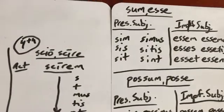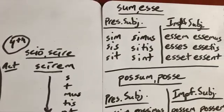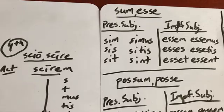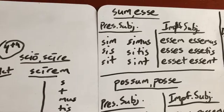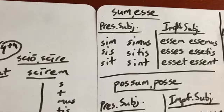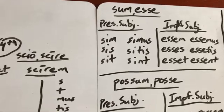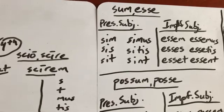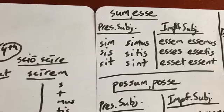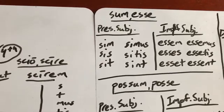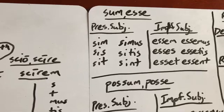We also have in this chapter the forms of 'sum' and 'possum' in the subjunctive. The present subjunctive of 'sum' — you can see there is sim, sis, sit, simus, sitis, sint. And then the imperfect subjunctive: you take the infinitive 'esse' and put your endings on it — m-s-t-m-u-s-t-i-s-n-t.